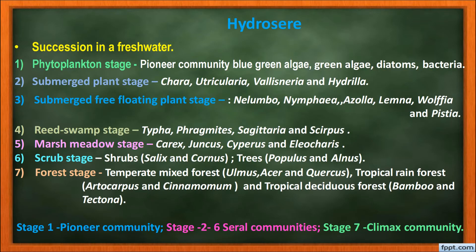Stage 4 is the Reed Swamp stage, also called the Amphibious stage. During this stage, rooted floating plants are replaced by plants that can live successfully in both aquatic and aerial environments — examples: Typha, Phragmites, Sagittaria. Stage 5 is the Marsh Meadow stage — when the pond becomes shallow due to decrease in water level, species of Cyperaceae and Poaceae live in it, such as Carex, Juncus, and Cyperus. At the end of this stage the soil becomes dry and marshy vegetation gradually disappears, leading to the shrub stage.